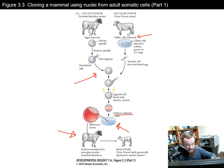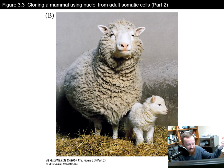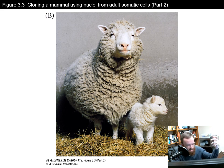So even though cells undergo differentiation and become very specialized, they still contain the entire complement of genes for every cell type within the organism. A classic example of this was the cloning of Dolly the sheep, the first higher mammalian animal cloned successfully. She went on to have her own offspring as well. Regardless of where you get DNA from, you still have the full complement of genes necessary to create an entire organism.